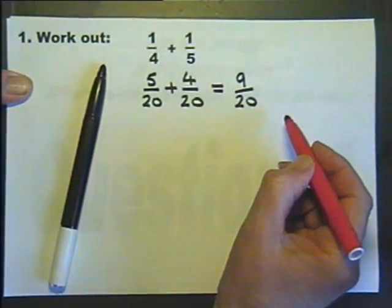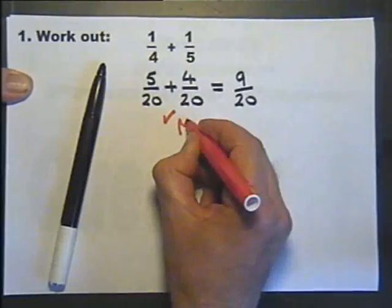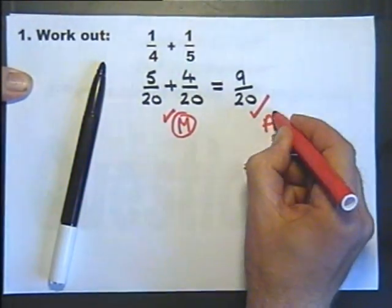This is actually worth two marks. One mark for how you do it, and that's called the method mark. And one mark for the answer, and that's called the accuracy mark.